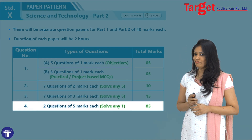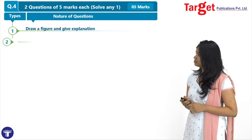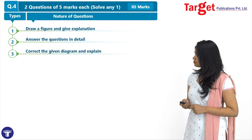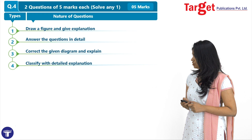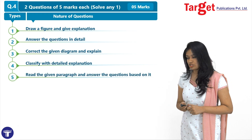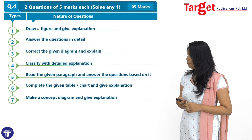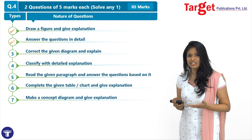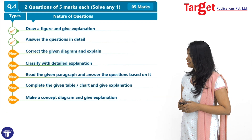Focusing on question number 4, which is for 5 marks, the types of questions you could come across are: draw a figure and give explanation, answer the question in detail, correct the given diagram and explain, classify with detailed explanation, read the given paragraph and answer questions based on it, complete the given table and chart and give explanation, and make a concept diagram and give explanation. You would likely be familiar with draw a figure and give explanation, and answer the question in detail.